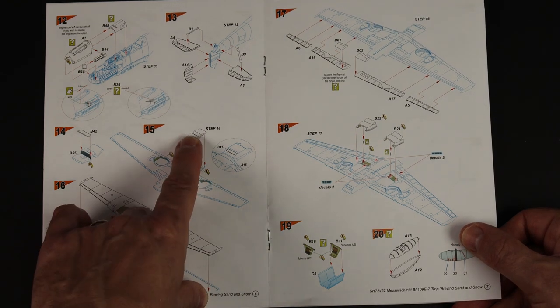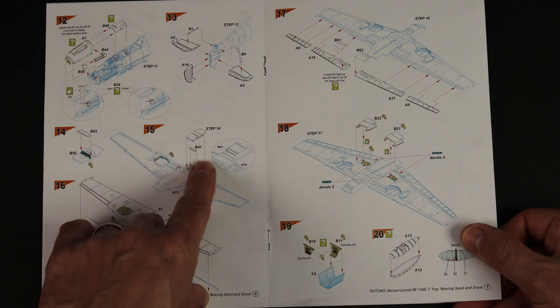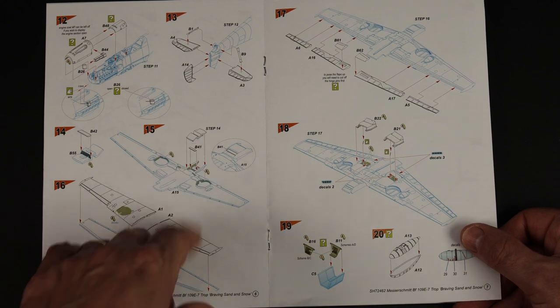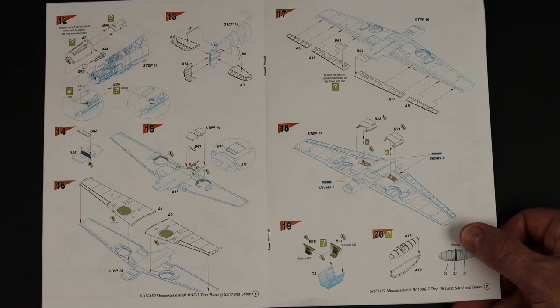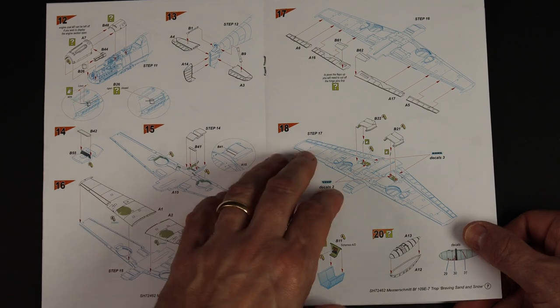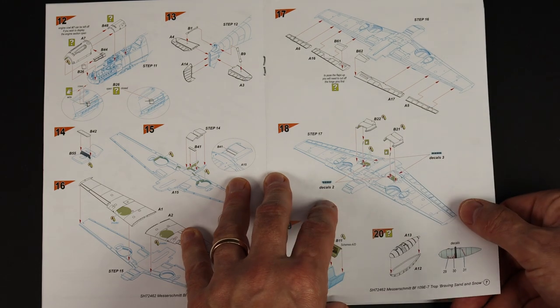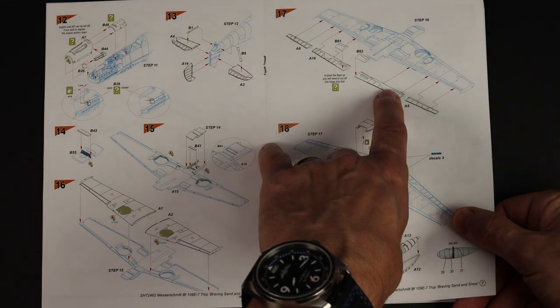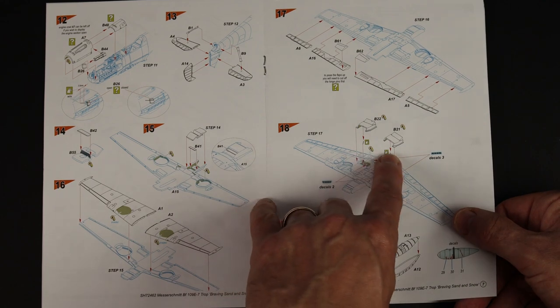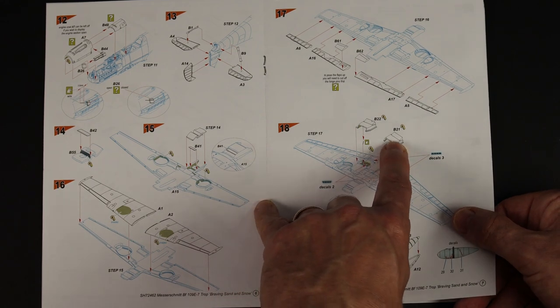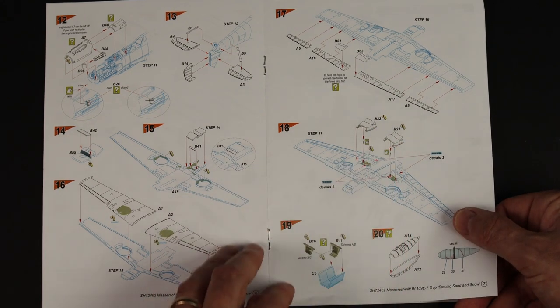First job though is to do the oil cooler and then putting the wings together, poseable flaps and ailerons which is cool. So I'll probably do my flaps dropped and one piece radiator covers with the cooling flaps already open.